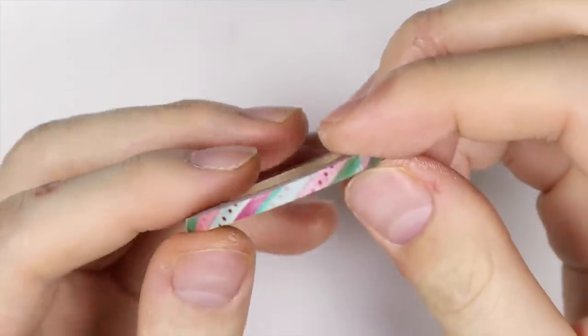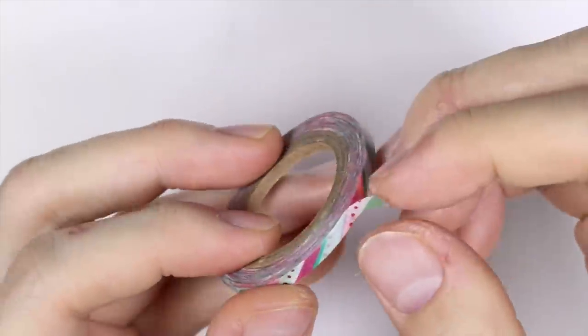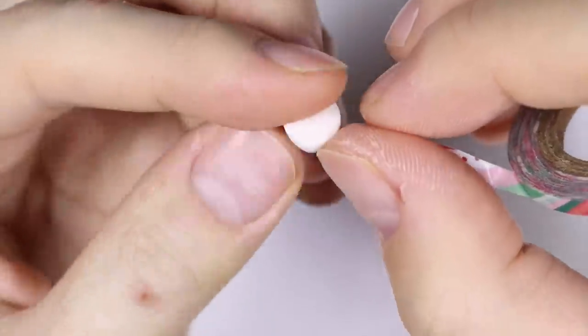Then I took some very thin washi tape and I decided to decorate my cone using some washi tape and this is the first time I tried this method.